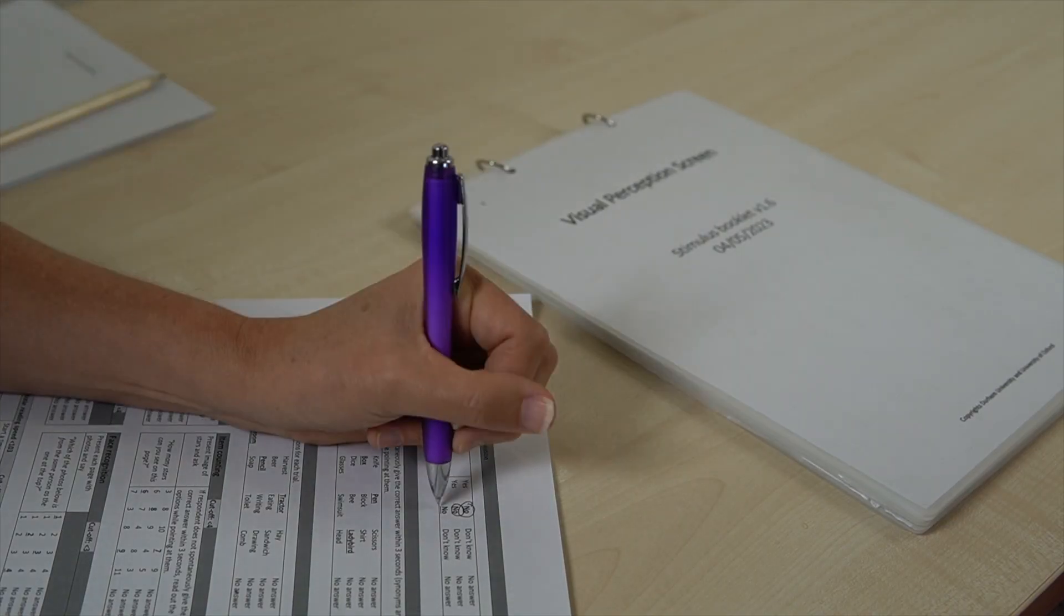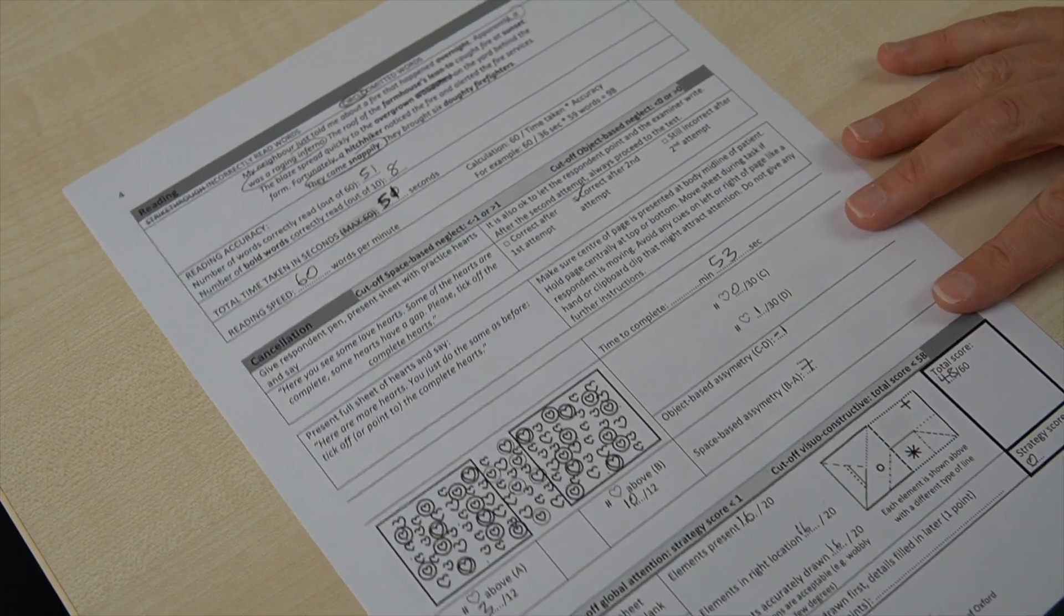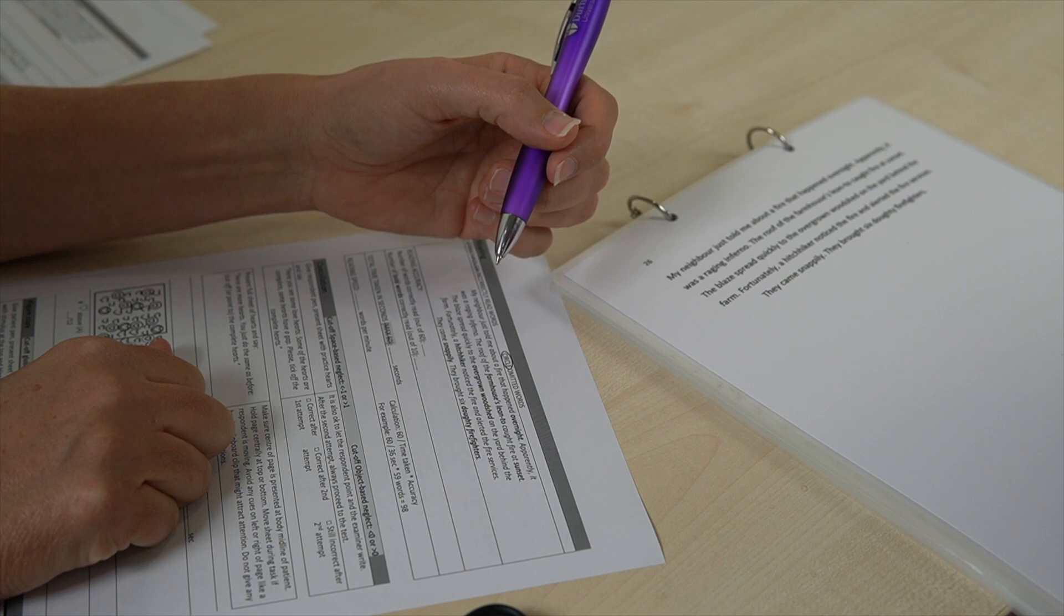Now we'll show you how to score OxVPS. The first page you can score in real time when you're with the patient just by circling the answer they give you. But the second page needs a little more involvement. So we suggest scoring that after you've finished your session with the patient. So we'll go through the reading task.